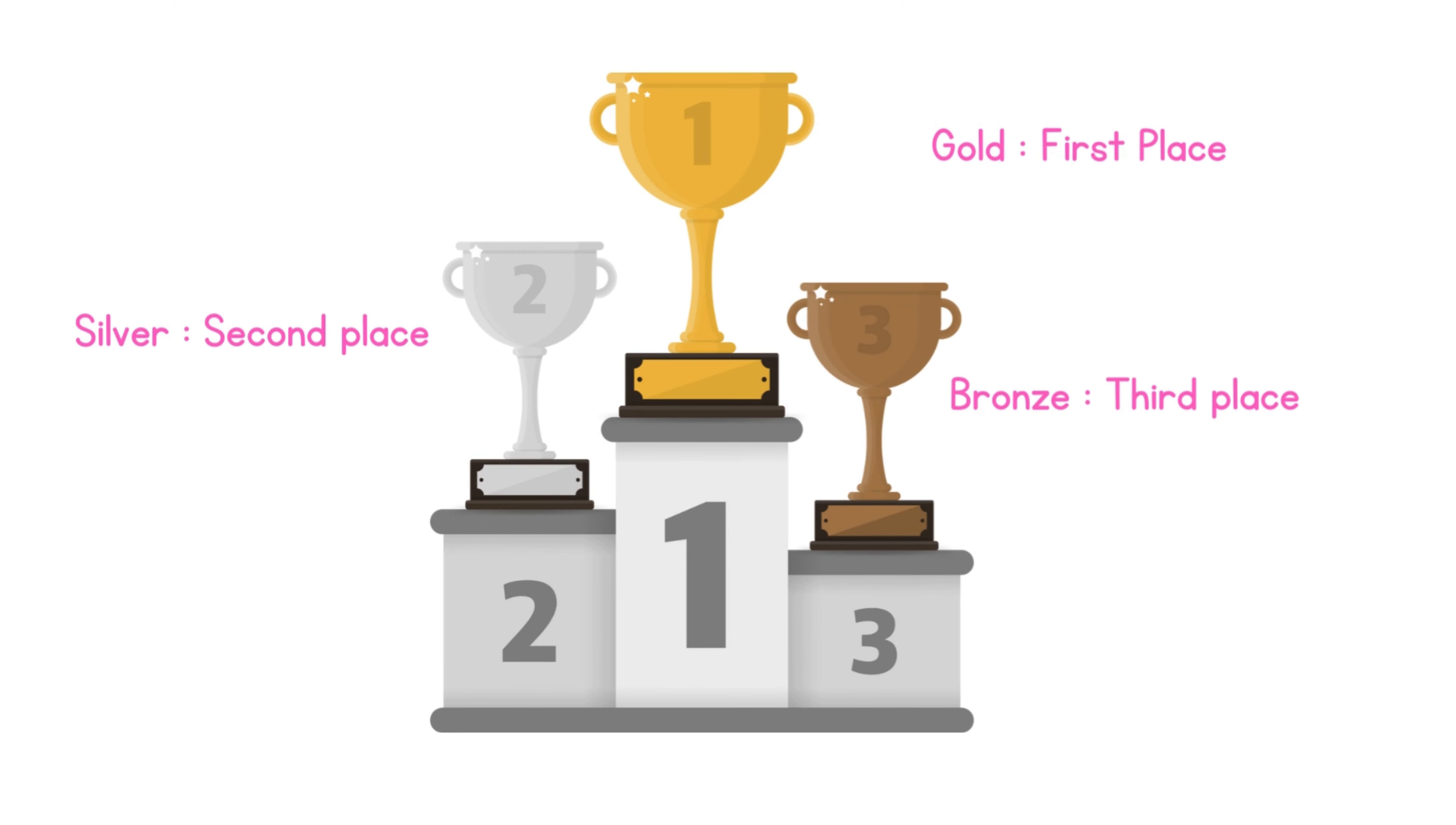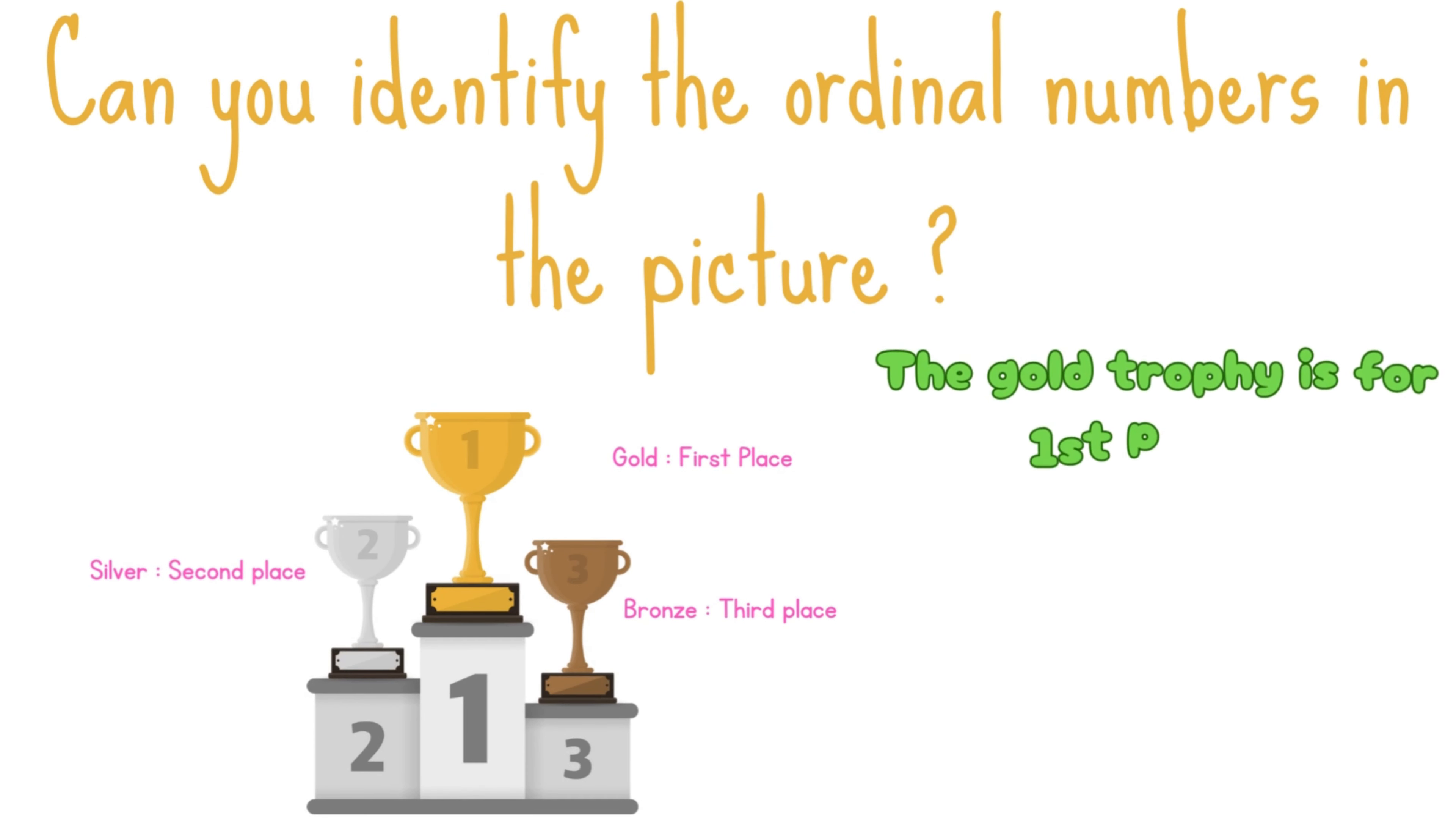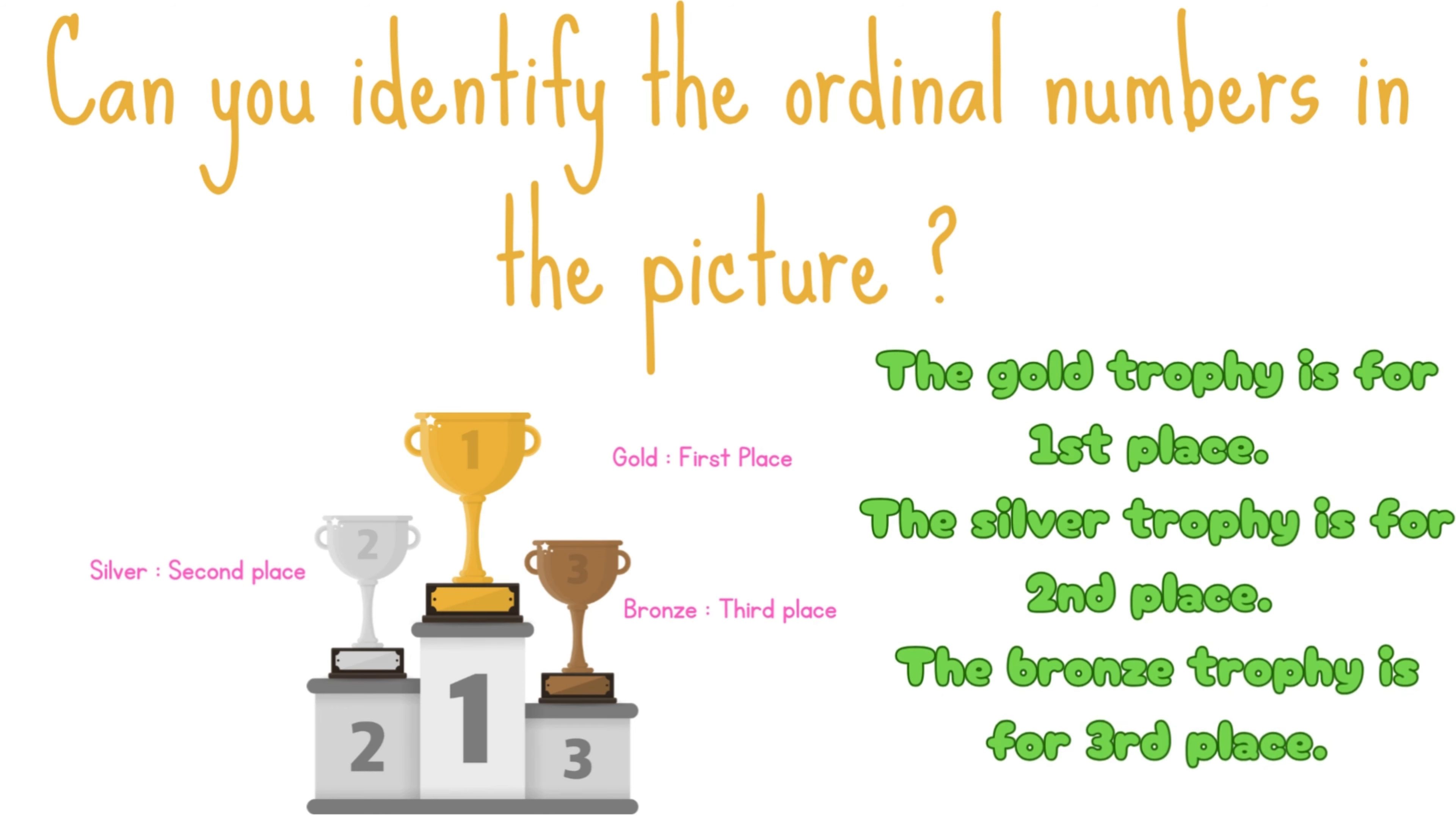Look at this picture. Can you identify the ordinal numbers in the picture? The gold trophy is for first place. The silver trophy is for second place. The bronze trophy is for third place.